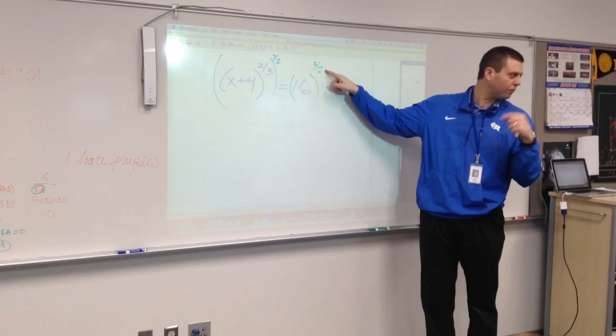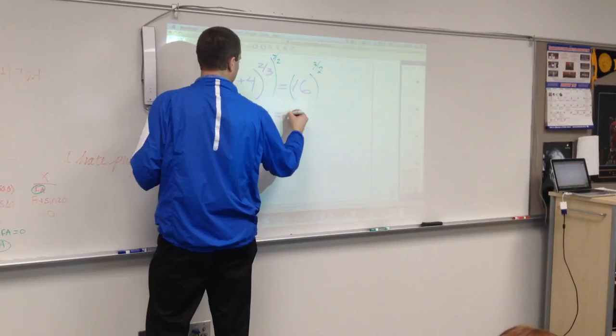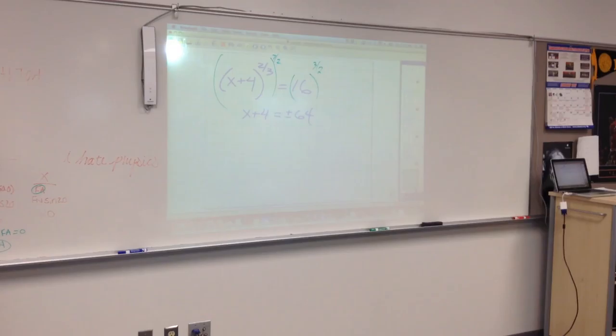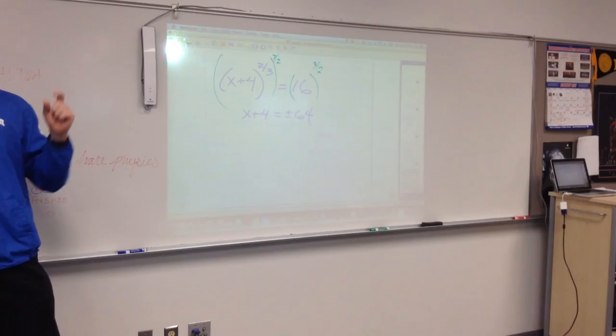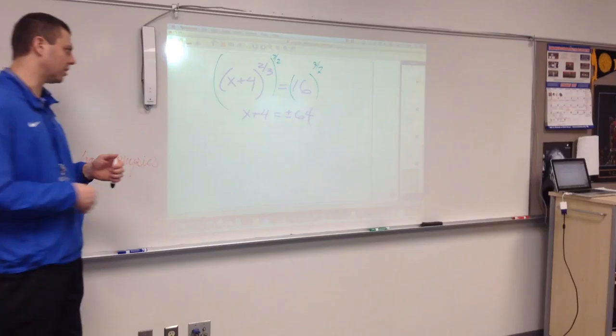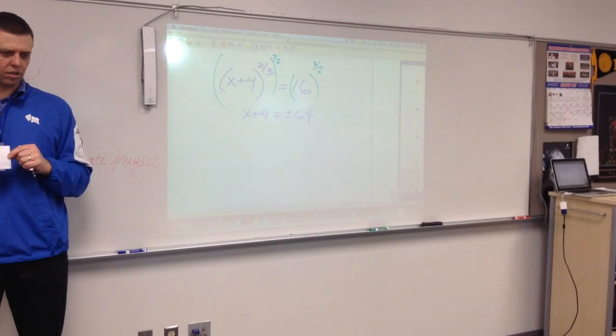So you'll get x plus 4 equals plus or minus 64, just like that. One step into the problem, you're already there. I like it because it's faster, I don't like it because a lot of times people tend to forget the plus or minus part when they do even roots. Subtract 4 from both sides and you'll get your same two answers we had on the last one, a positive 60 and a negative 68. Any questions on that?